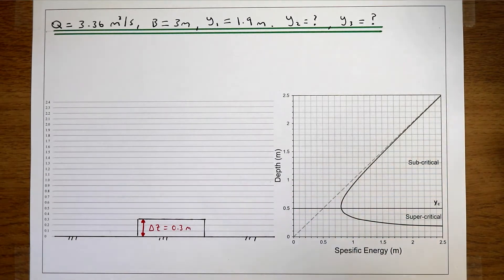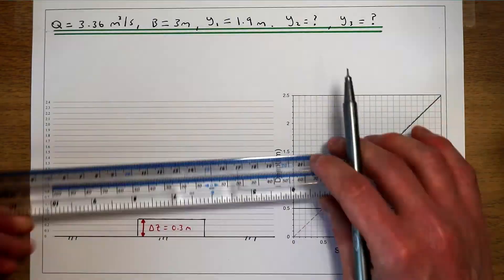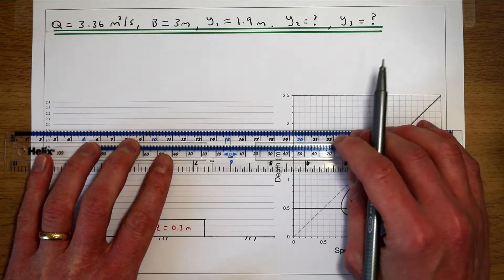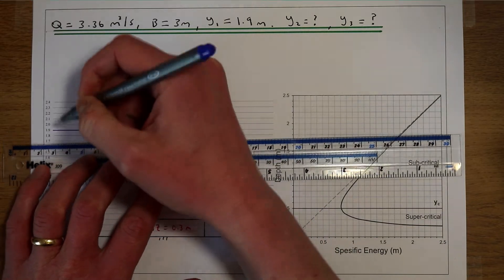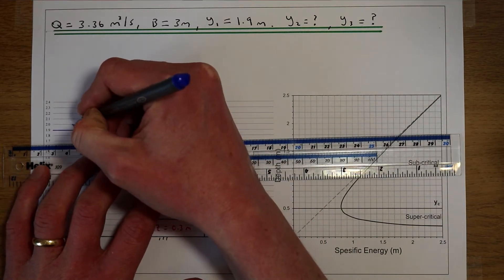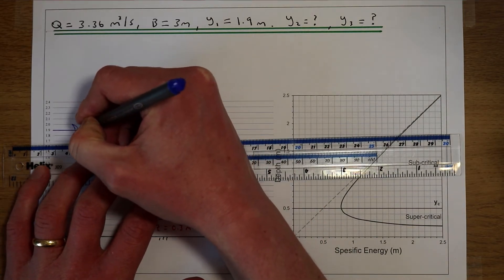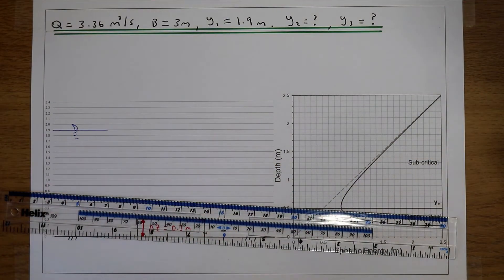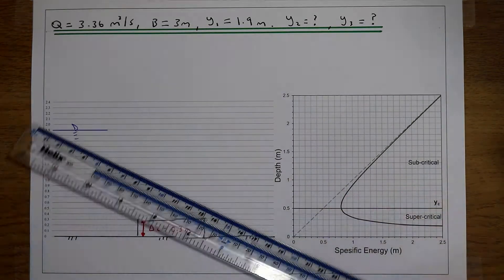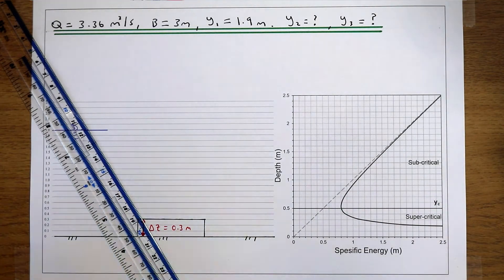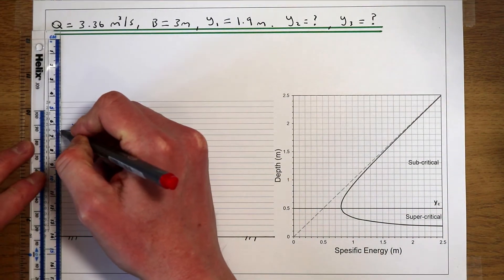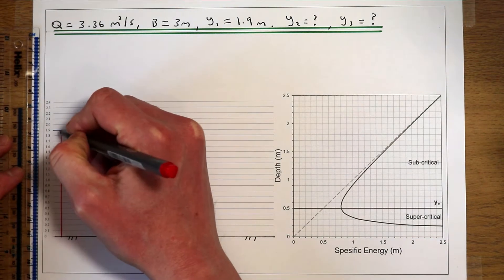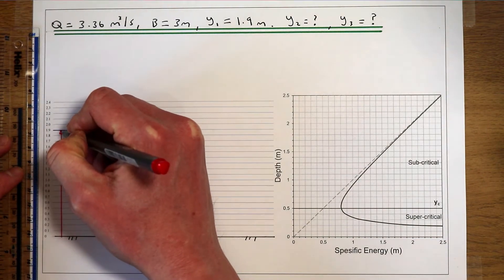Our river is starting out at 1.9 metres in flow depth. So the initial flow depth, y1, is 1.9 metres.